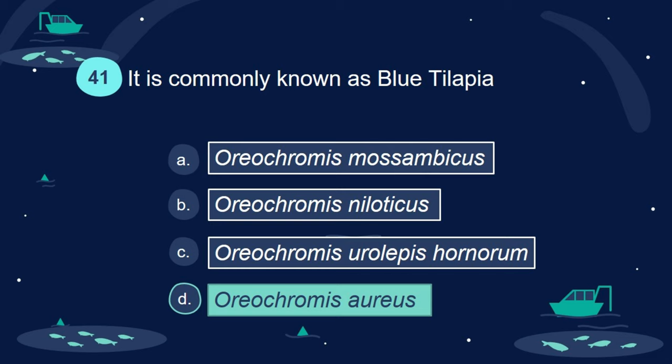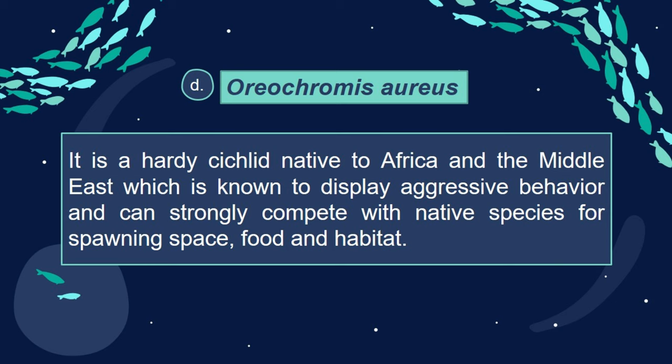Answer: D. Oreochromis aureus. It is a hardy cichlid native to Africa and the Middle East, known to display aggressive behavior and can strongly compete with native species for spawning space, food, and habitat.